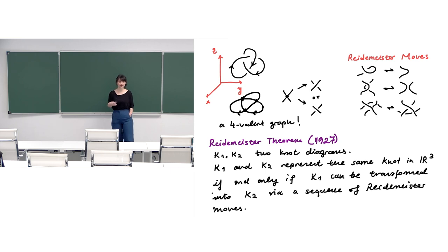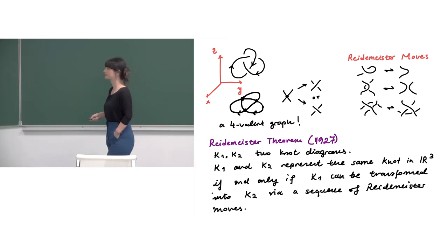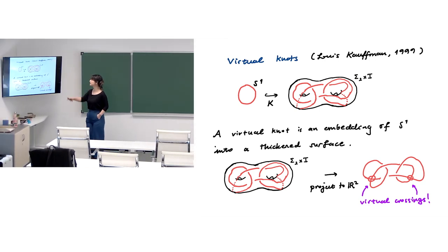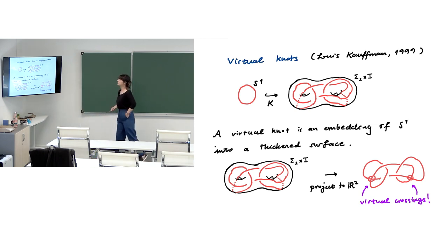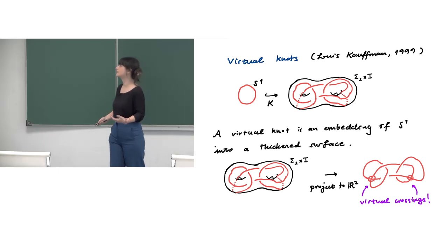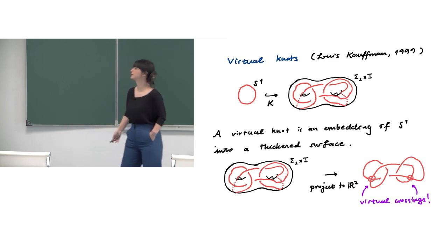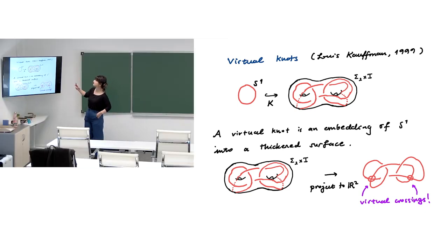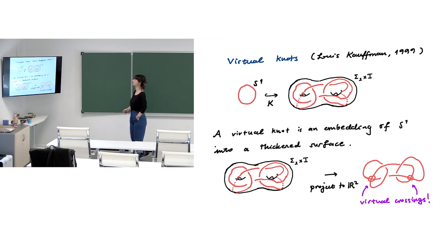We have many invariants defined for knots using planar representations. There are also virtual knots — these are knots embedded in some genus-g surface with a thickening. We take a surface of genus g and thicken it with the unit interval so that our knots can be embedded into this three-dimensional manifold. Here we see a Kishino knot in a genus-2 surface, which we can regard as the surface diagram of the knot.